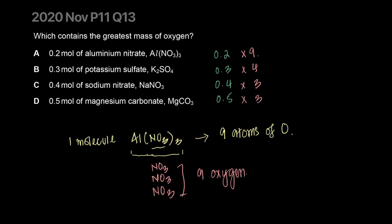So 0.2 times nine, it's going to be 1.8, it's going to be 1.2, it's going to be 1.2, and it's going to be 1.5. I thought, oh, 1.8 does win, right? I was thinking that was winning. Yep, A is the answer.